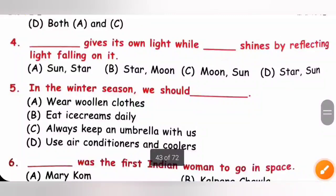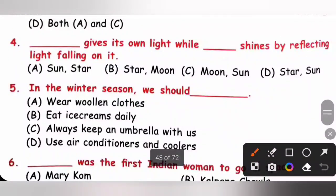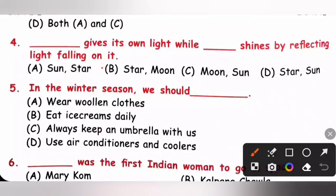Question 4: What gives its own light while what shines by reflecting light falling on it? The sun and stars have their own light, while the moon shines by reflecting the light that falls on it. So option B is the correct answer.